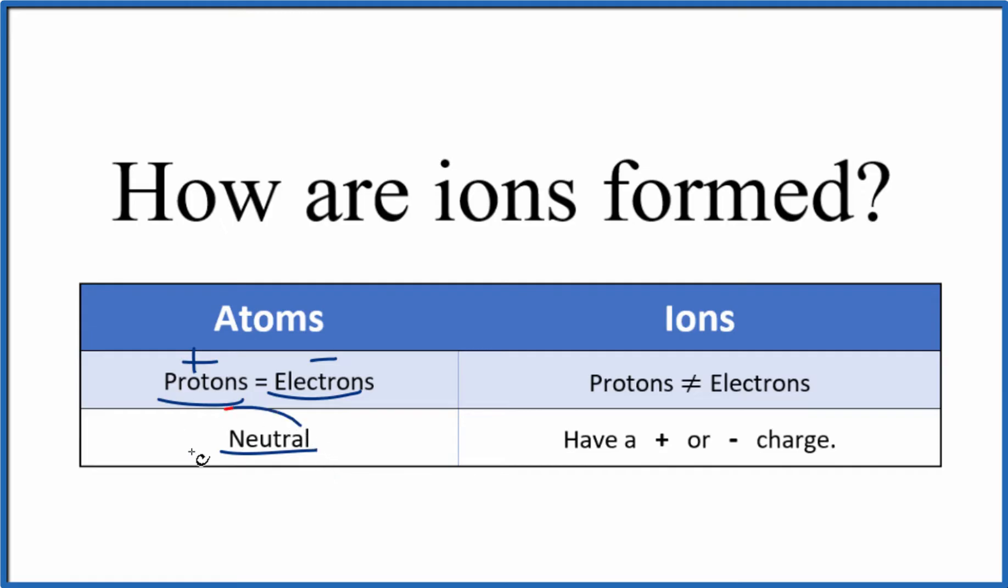Atoms on the periodic table are neutral. But for ions, the number of protons does not equal the number of electrons. So when atoms gain or lose electrons, we end up with ions, and they have a positive or negative charge.